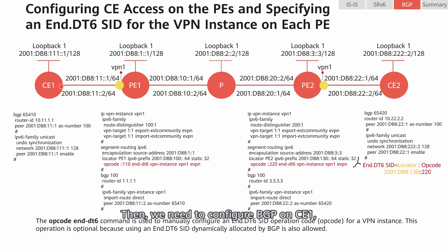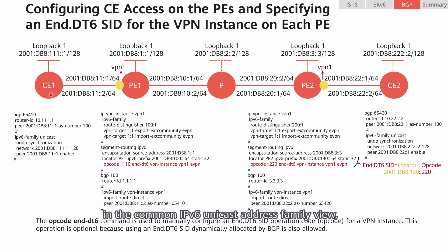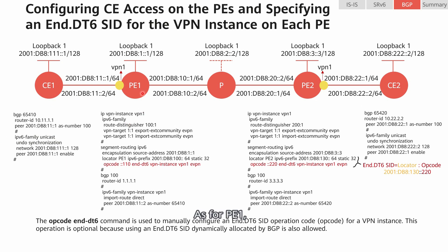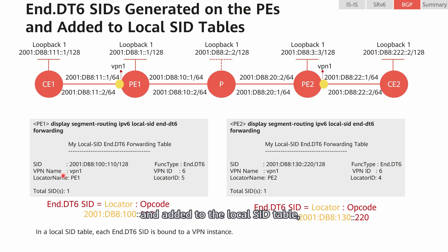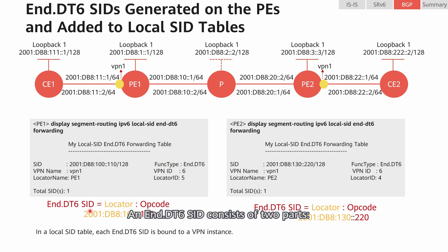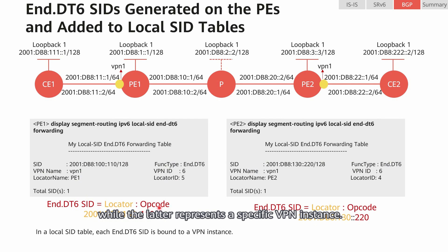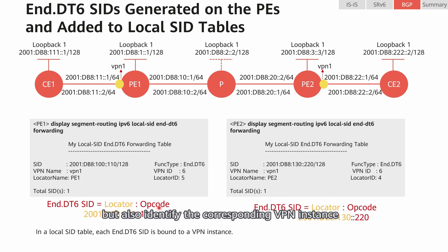Then we configure BGP on CE1, enabling the BGP peer relationship between CE1 and P1. On CE1, the configuration is performed in the common IPv6 unicast address family view, and the local routes of CE1 can be imported. As for PE1, the configuration is performed in the IPv6 VPN instance address family view. After these configurations are completed, an End.DT6 SID is generated on the PE and added to the local SID table. Each local SID is bound to a VPN instance. An End.DT6 SID consists of two parts — locator and opcode — enabling a device to both direct data packets to the advertising device and identify the corresponding VPN instance based on the opcode.